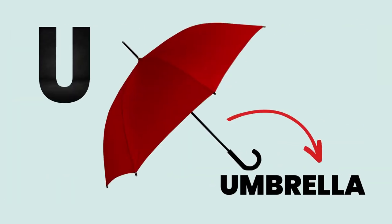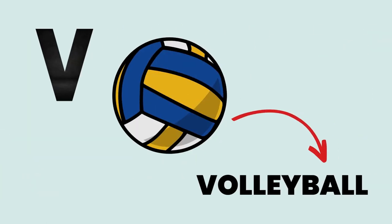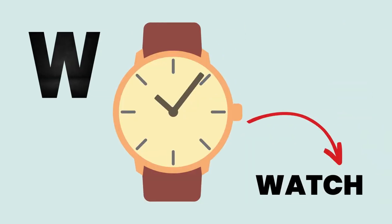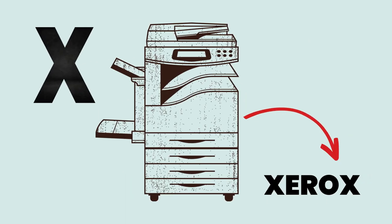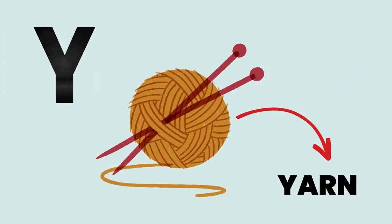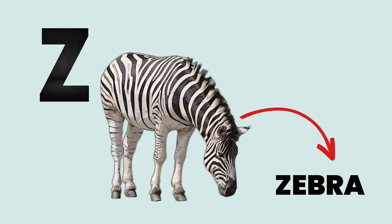U for Umbrella. V for Volleyball. W for Watch. X for Xerox. Y for Yarn. Z for Zebra.